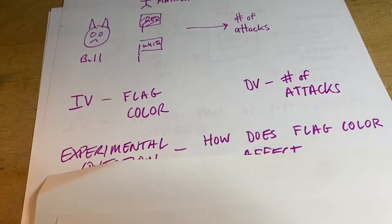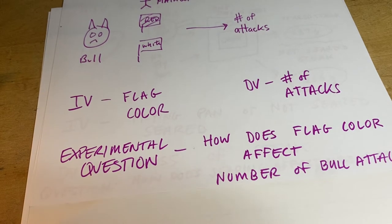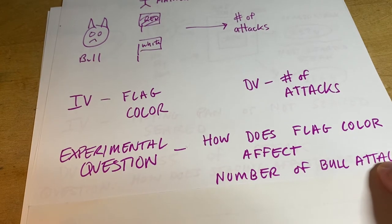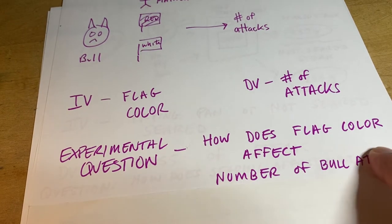The experimental question basically is, how does the independent variable, flag color, affect the dependent variable, which is number of bull attacks? So that's our experimental question.